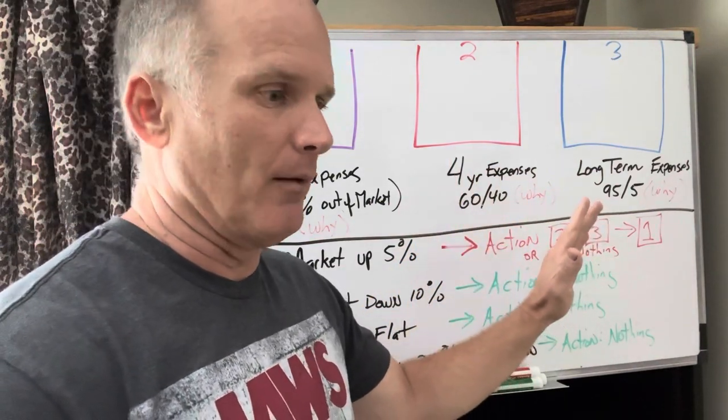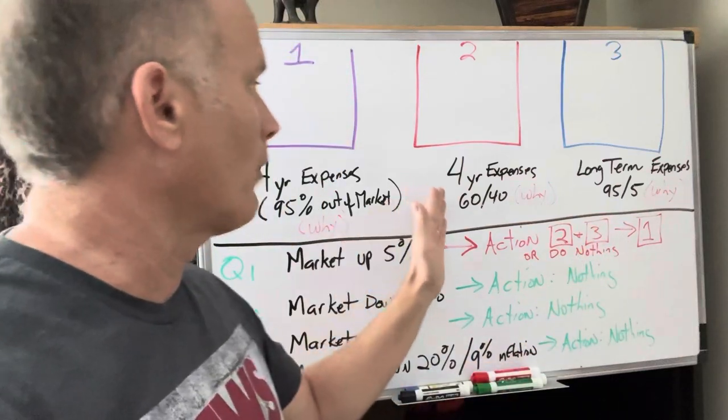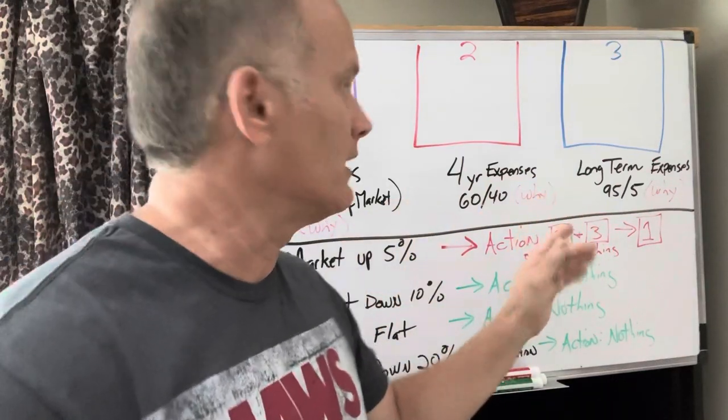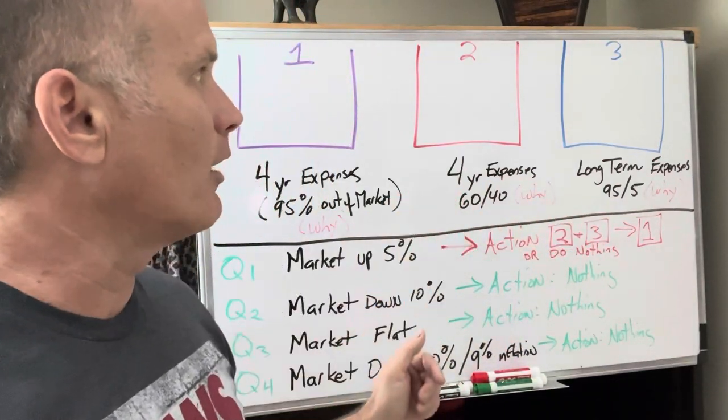The purpose of this bucket is to get good returns plus serve as an extended bear, extended poor market conditions. Say poor market conditions go six, seven, eight years. You've got this bucket to help you out here.